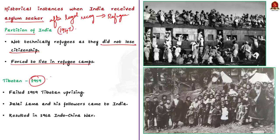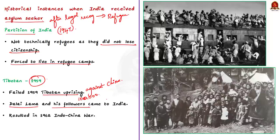The next major instance was in 1959. There was a Tibetan uprising against China. China quashed the uprising brutally, and to escape prosecution by the Chinese government, the Dalai Lama along with more than 1 lakh followers fled Tibet and came to India seeking political asylum. India provided them with refugee status, but this move proved costly — it was one of the reasons for the 1962 Indo-China war.